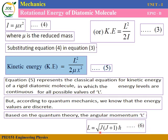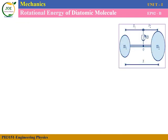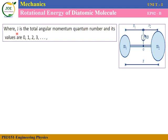From quantum theory, the angular momentum L equals the square root of J times J plus 1, multiplied by h-cross. Here J is the total angular momentum quantum number, which takes values 0, 1, 2, 3, and so on.